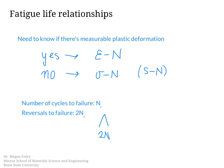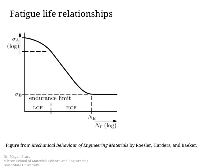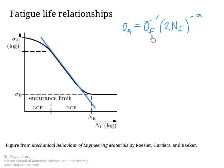Let's start with the relationship between the stress amplitude and the number of cycles to failure. This plot shows the log of the stress amplitude compared to the number of cycles to failure. We're going to focus on the high cycle fatigue section, which is linear on this log-log plot. We end up with a power law relationship where sigma_a is the stress amplitude and sigma_f' is the fatigue strength coefficient.